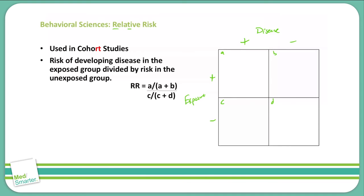The 5 patients exposed to radiation and diagnosed with cancer have both disease and exposure, so they go into box A. The 5 patients who had radiation exposure but did not develop disease go into box B. The 1 patient who had the disease but no radiation exposure goes into box C. The remaining 9 patients with no disease and no exposure go into box D.